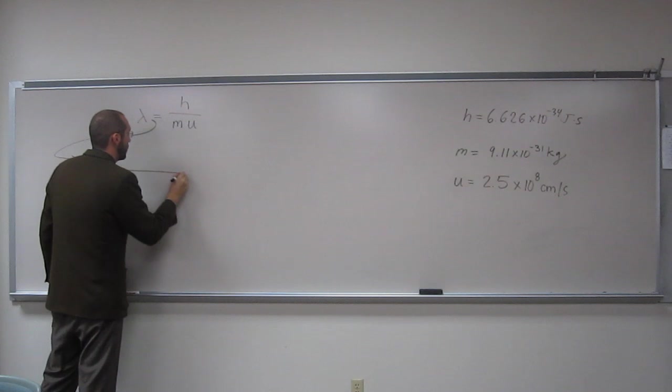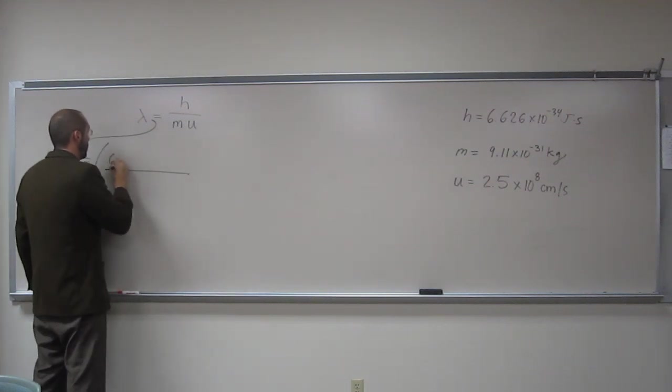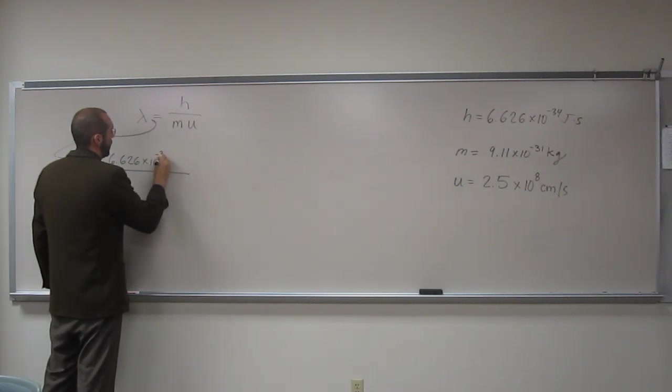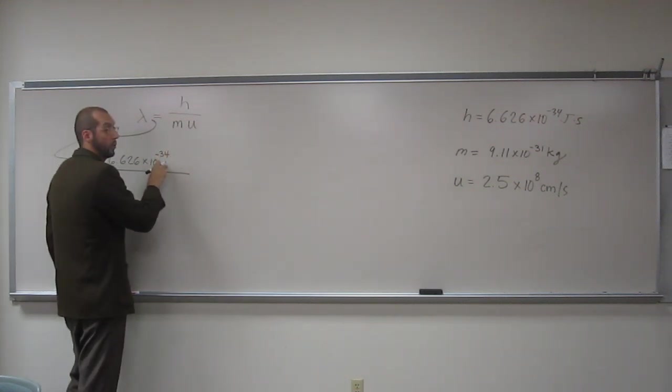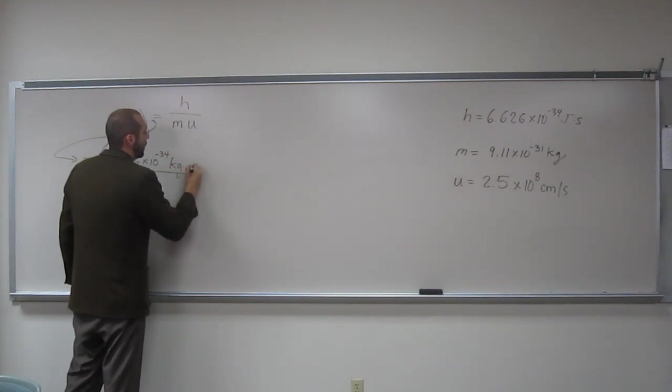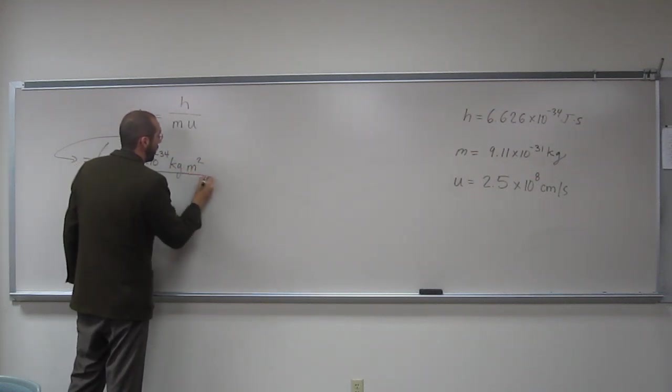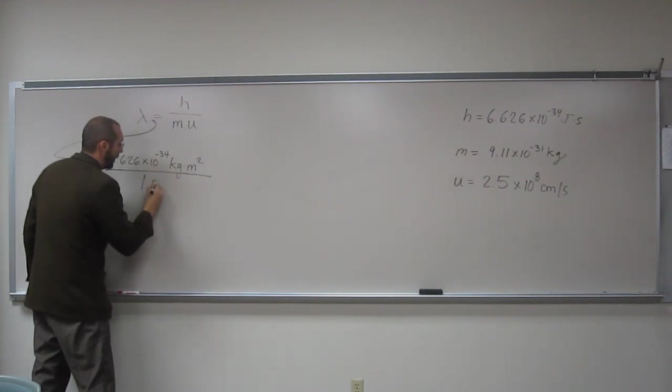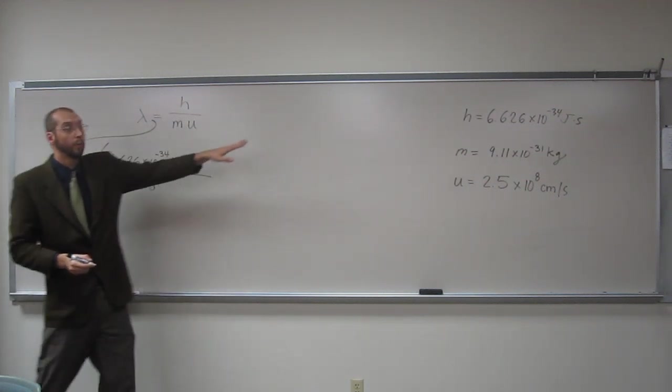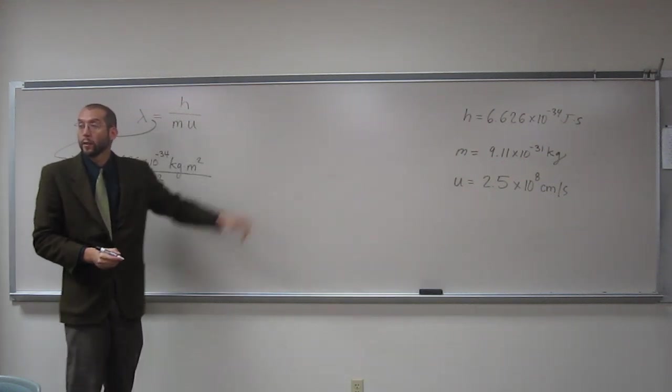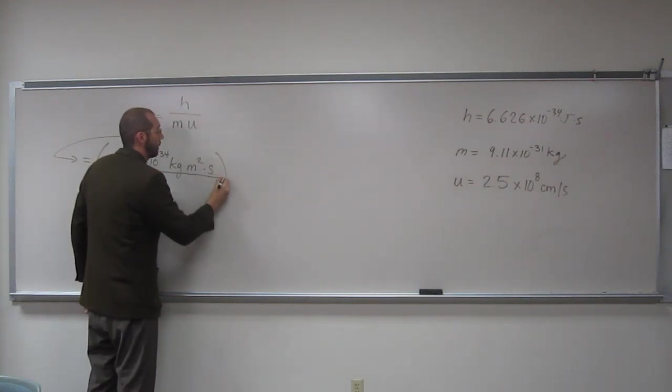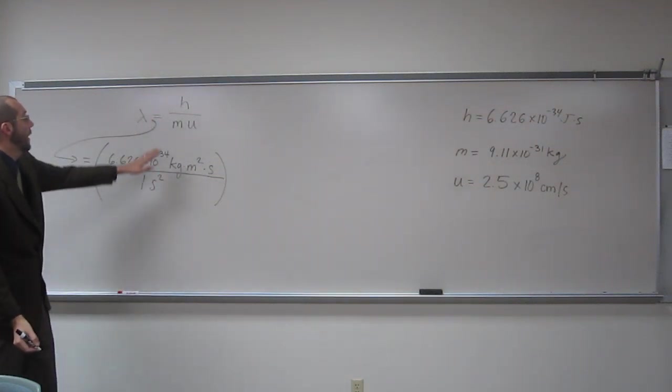So let's take it from joules to what it's derived from. So 6.626 times 10 to the negative 34. Now joules, what did we say, was kilograms meters squared per second squared. Like that, right? But it's also multiplied by seconds, so we've got to multiply that by seconds on the numerator.